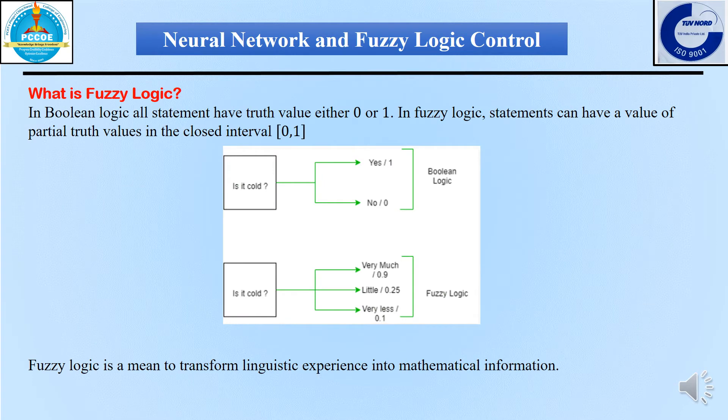Let me answer the important question: what is fuzzy logic? We know that in Boolean logic, every statement has only two truth values, which are either 0 or 1. For example, if I ask you the question 'Is it cold today?' — if your answer is yes, then the corresponding truth value is 1, and if your answer is no, then the corresponding truth value is 0.